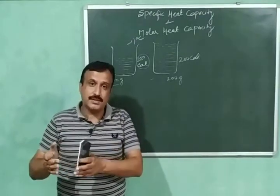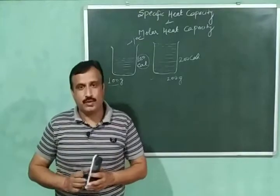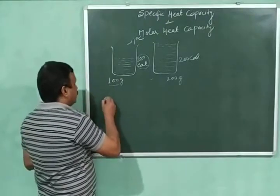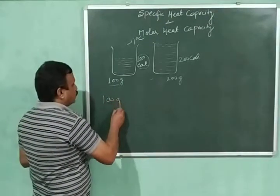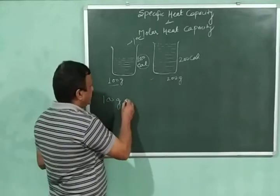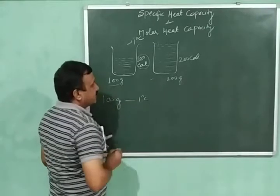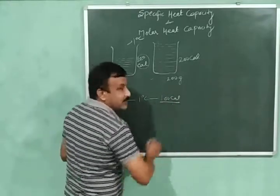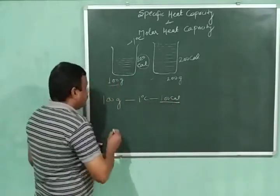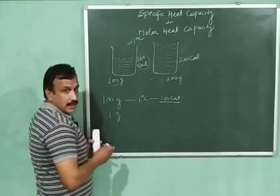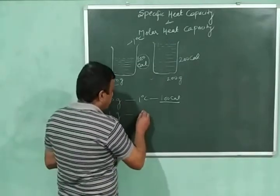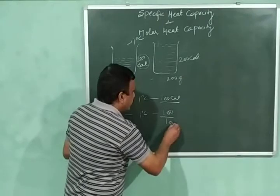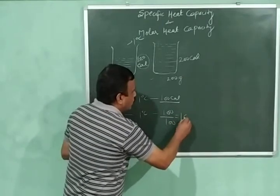Specific heat capacity is an intensive property — it is independent of mass. To increase the temperature of 100 grams of water through 1 degree Celsius, 100 calories of heat is required, which is its heat capacity. Then to increase the temperature of 1 gram of water through 1 degree Celsius, the heat required is 100 divided by 100, which is equal to 1 calorie.